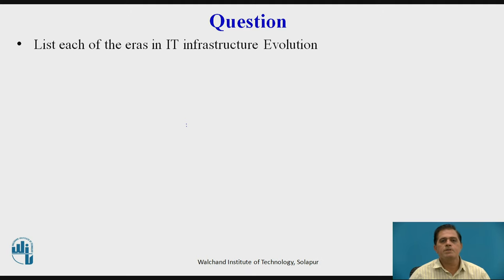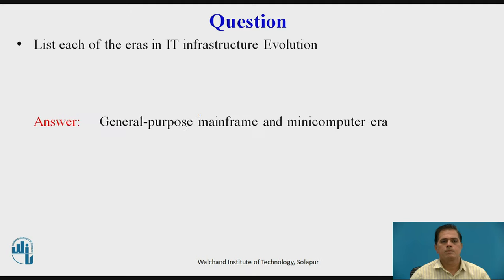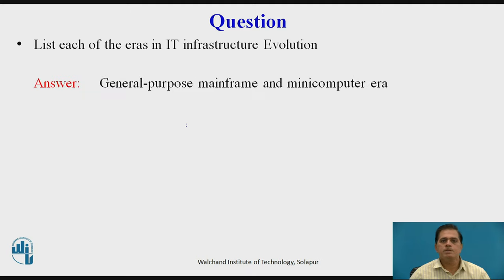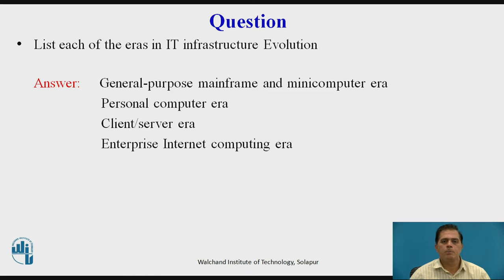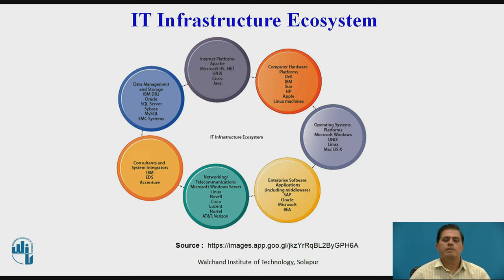Now we have a review question: list each of the eras in IT infrastructure evolution. The answers are: first, the general purpose mainframe and minicomputer era; second, the personal computer era; third, the client-server era; fourth, the enterprise internet computing era; and fifth, the cloud computing era.